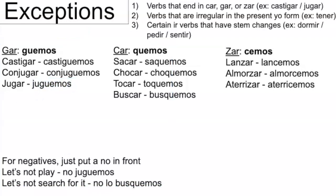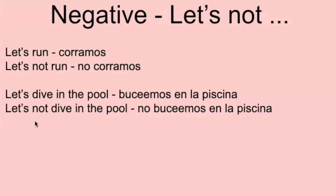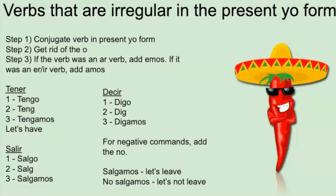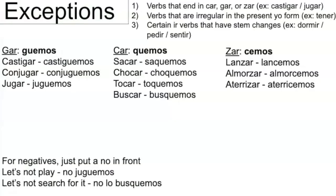And going back to the negative, you just put a 'no' in front. So like 'no corramos,' just 'no juguemos.' Or 'let's not search for it' — once you add the 'it,' 'no lo busquemos.' So that's essentially all for the -car, -gar, -zar verbs.